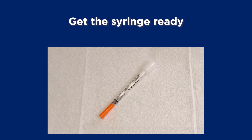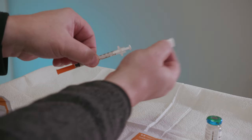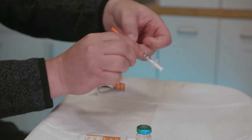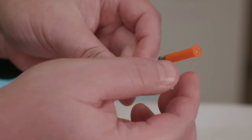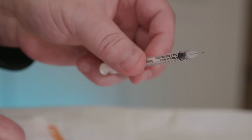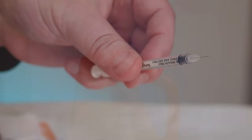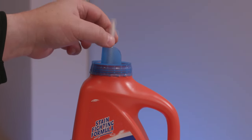Next, get the syringe ready. If there's a cap covering the plunger, take it off. Then, take off the orange cap covering the needle. Be very careful not to let anything touch the needle. If anything does touch it, put the syringe in your sharps container and use a new one.